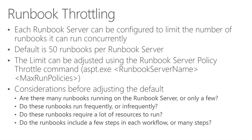Before changing the throttling value, consider: how often is the runbook going to be used — very frequently or infrequently? How many resources does it require? If it has high resource requirements, you'd want to lower the number below 50. If it has low resource requirements and runs infrequently, you might increase the concurrency. Also consider how many runbooks are on the runbook server and how many steps are involved in each.